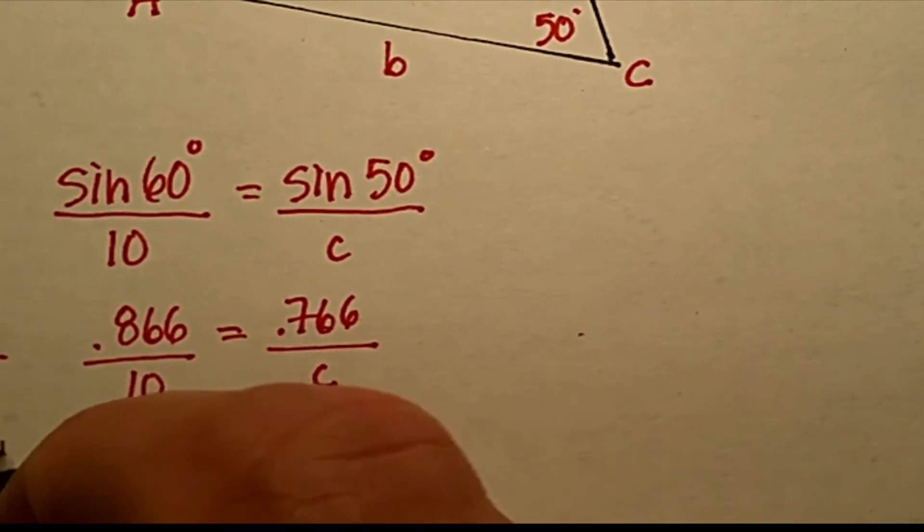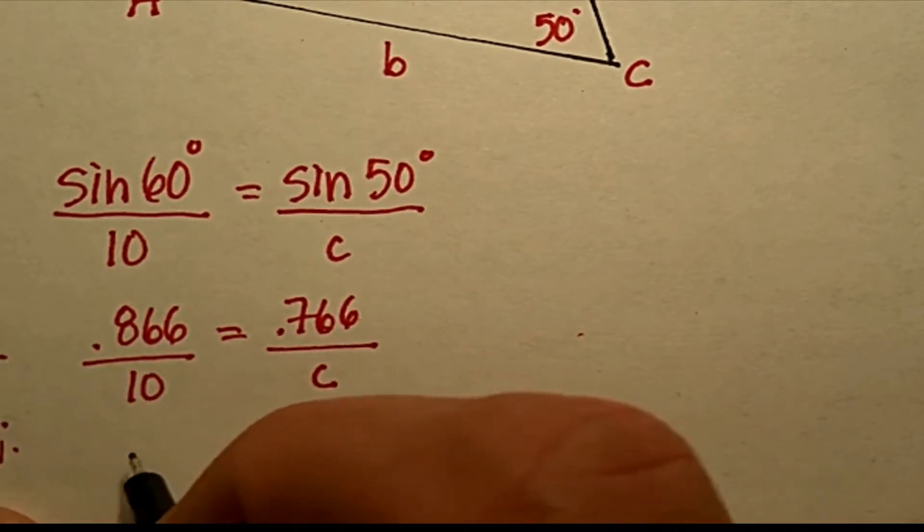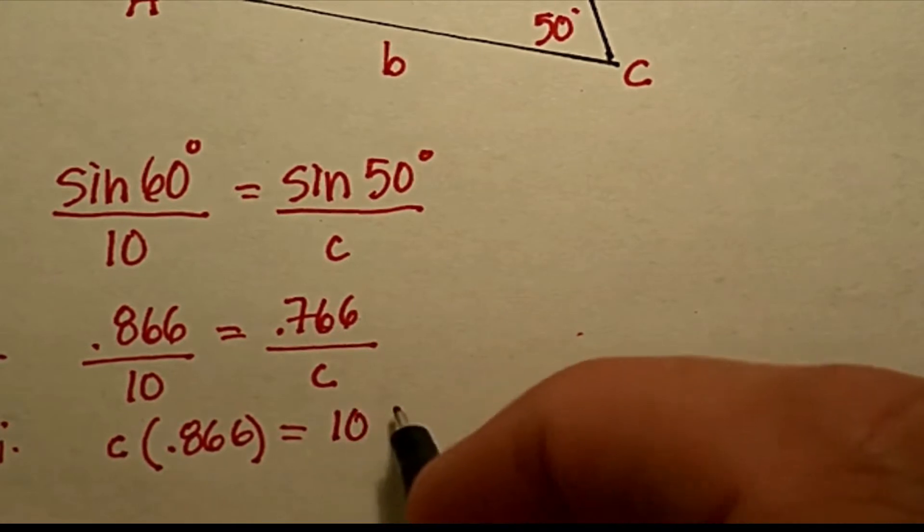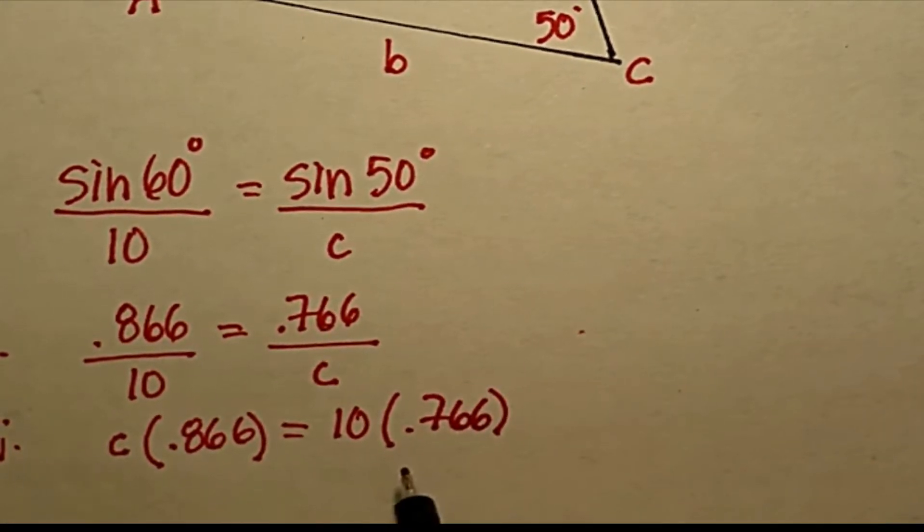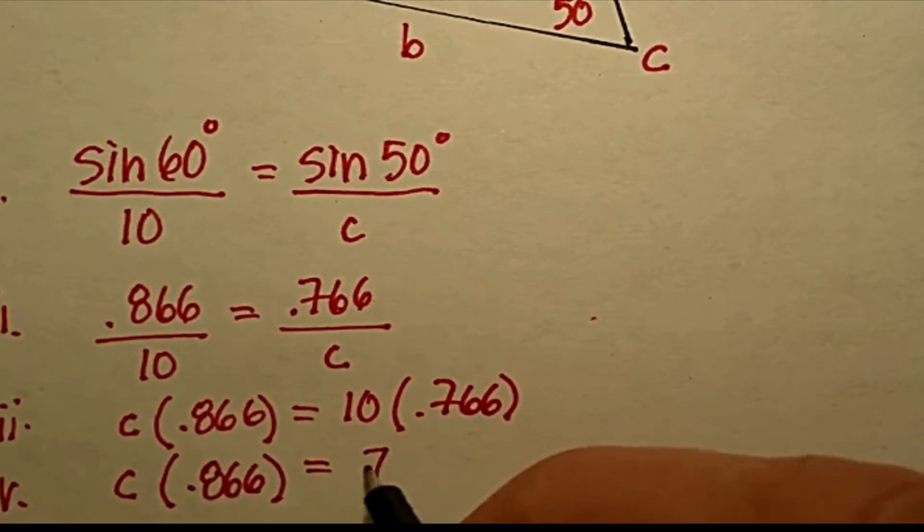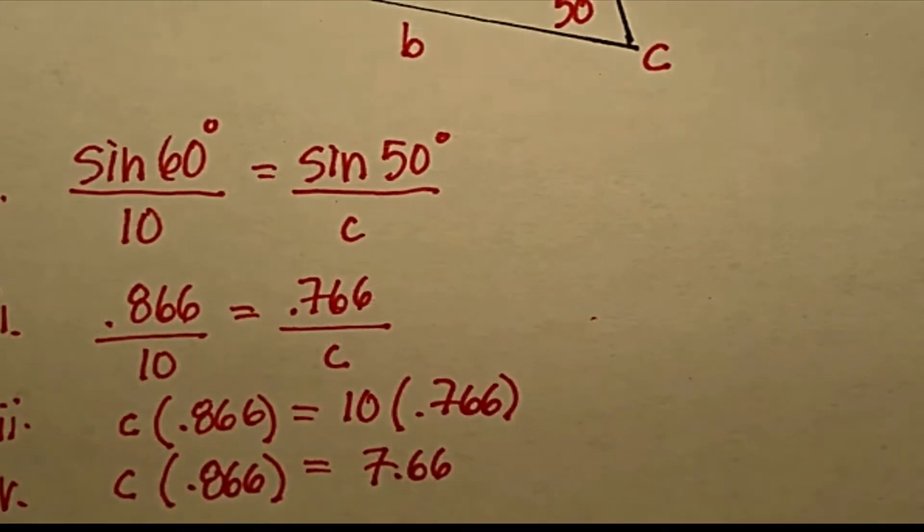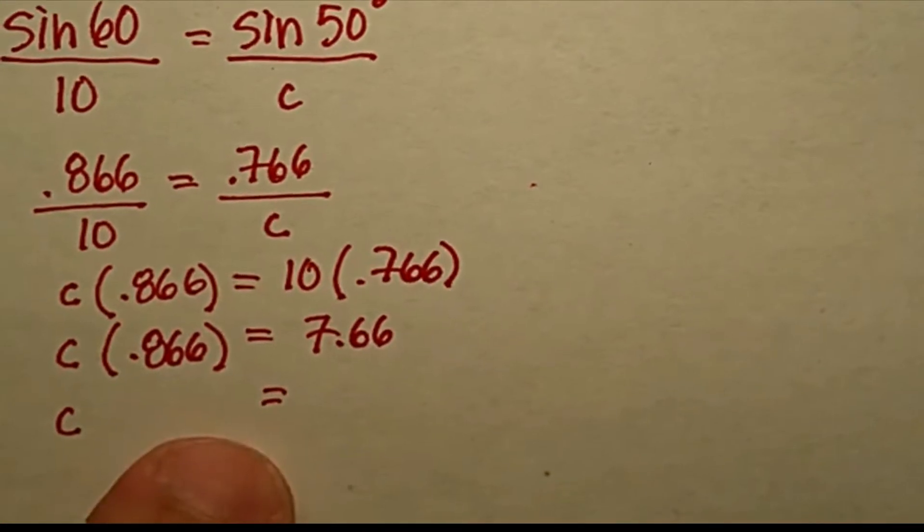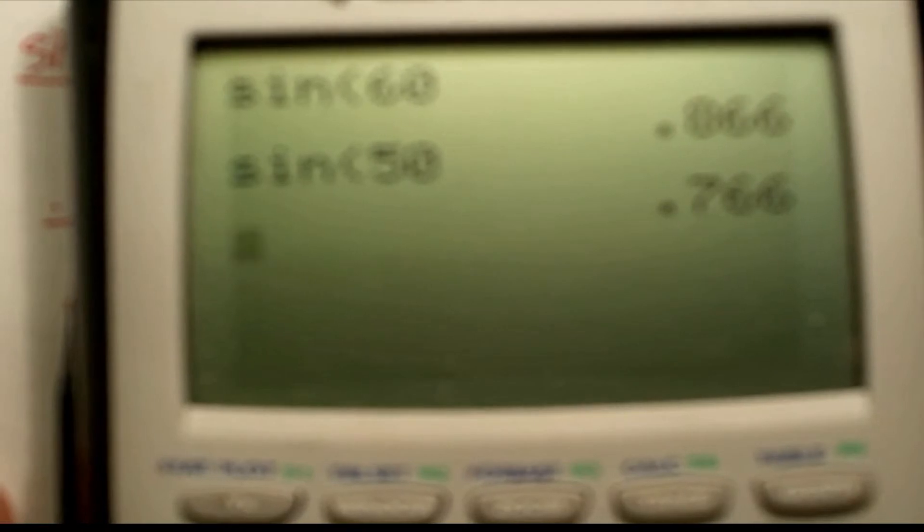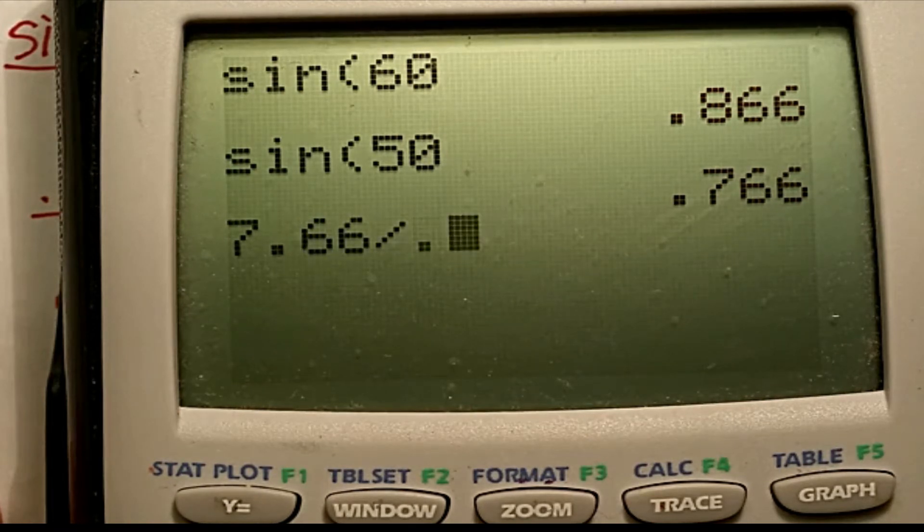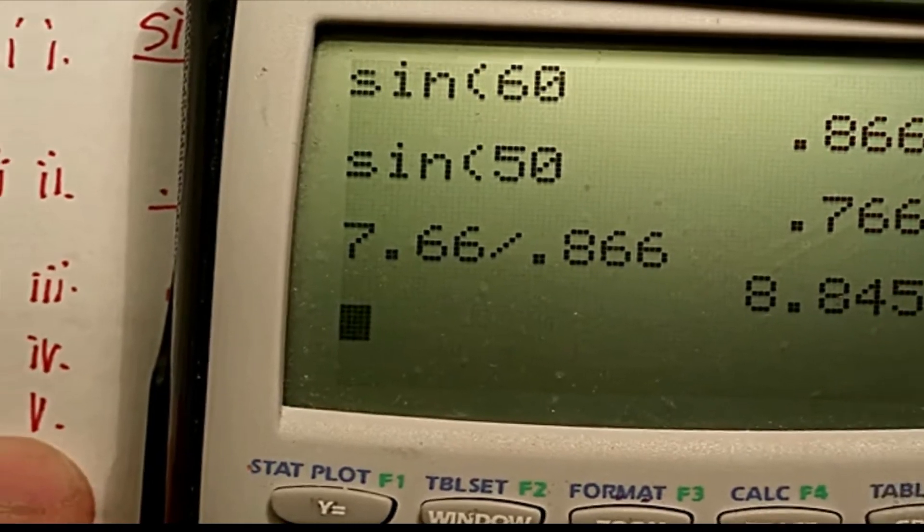Let me just make this a little bit bigger so you can see it. Okay, let's go ahead and do cross products. So, that times that gives me C times 0.866, 10 times 0.766. Move the decimal place over one. So, step four. And then finally divide both sides by 0.866. And that should give me my answer. Let's see what we do here. So, C will be equal to 0.766, or 7 rather, 0.766 divided by 0.866, 0.845.